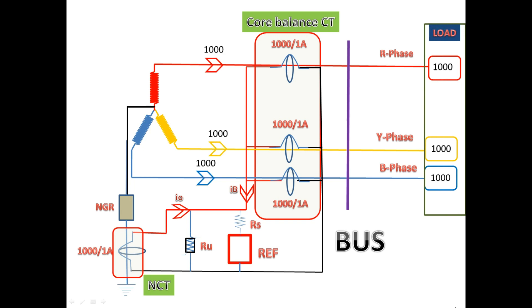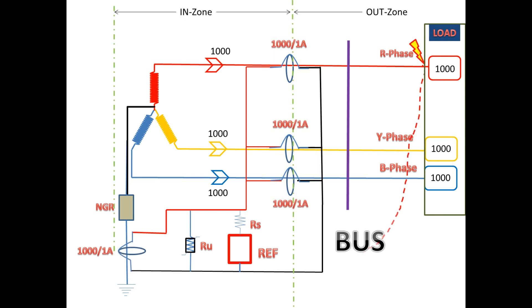In this case, the load current is 1000 amps in each phase. A phase-to-earth fault occurs on R phase. Due to this fault, the fault current is 500 amps. So the load current gets added with this fault current.